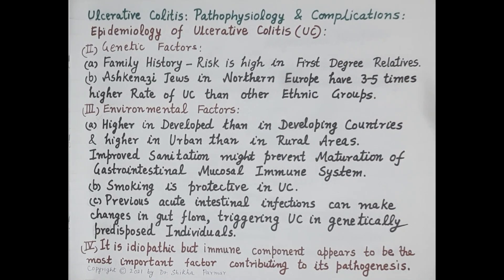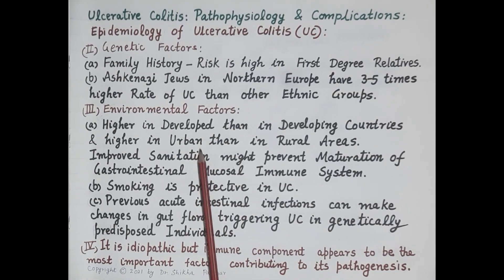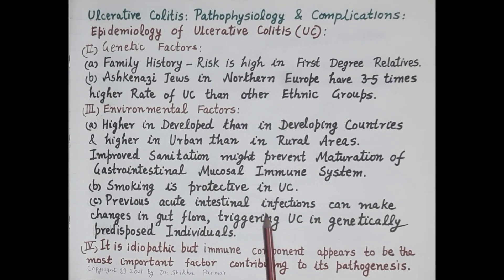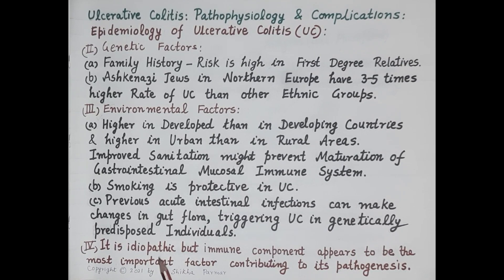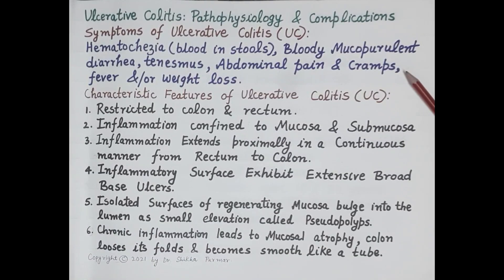This genetic link is well established. Regarding environmental factors, ulcerative colitis is higher in developed than developing countries and higher in urban than rural areas. Improved sanitation in developed countries might prevent maturation of the immune system, contributing to the disease. Smoking has been found to be protective in ulcerative colitis. Previous acute intestinal infections can alter gut flora, triggering the disease in genetically predisposed individuals. The disease is idiopathic — its exact cause is unknown, but immune components appear to be the most important contributing factor.